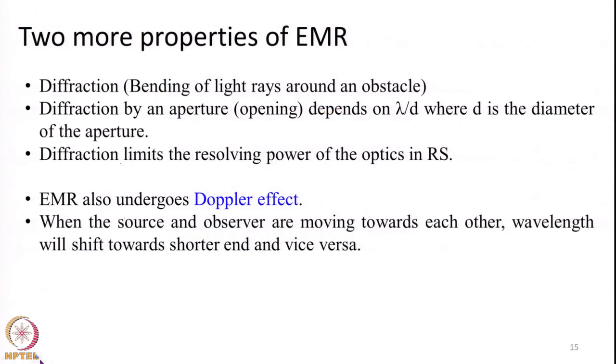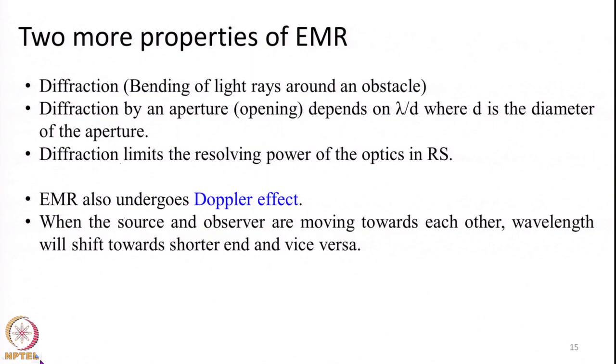Two more properties of EMR: when EMR finds obstacles on its path rather than being completely stopped, it has the property of bending around the edges of the obstacle — this is called diffraction. In school physics labs we may have done experiments with a prism to split white light into seven colors; that is related to diffraction, where the light ray bends around edges or through a lens border at certain angles. The angle at which the light ray is bent depends on the medium and also on the wavelength.